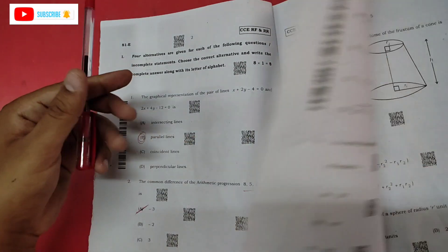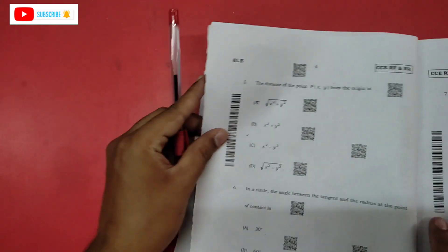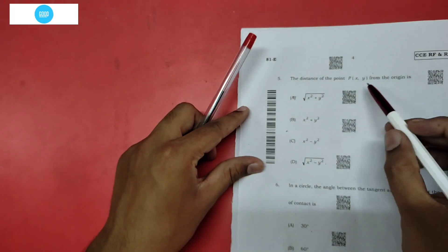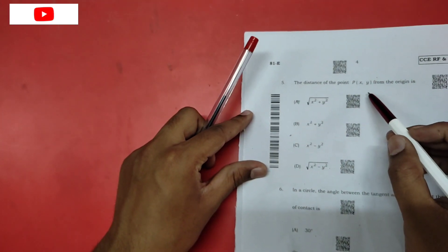Sin 30 is equal to one half. So this value is easy. Next two marks — distance between origin and point P(x, y).